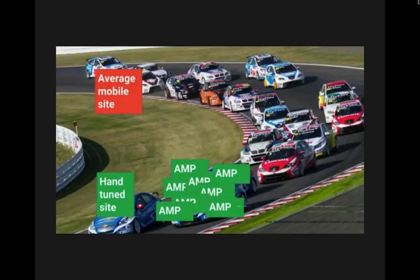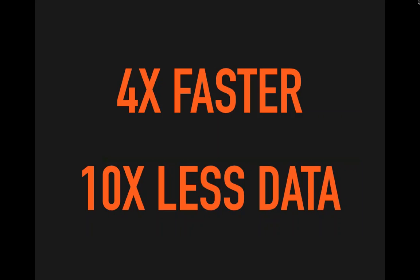If you look at this graphic, we've got some NASCAR cars. In the back you see the average mobile site, in the very front you see a hand-tuned site, and right behind that you see all of these AMP boxes. The idea is that if you have a fully dedicated developer team working on your site every single day, it is possible to have a site faster than an AMP page. However, most people don't have that kind of budget or resource, so AMP is a good, quick way to get your site really fast on mobile without spending a ton of money. Tests show that by using Google AMP, your mobile site could be four times faster and use ten times less data than a basic mobile search result page.